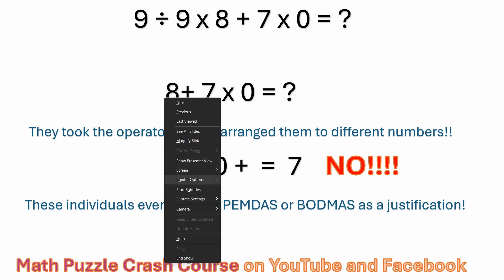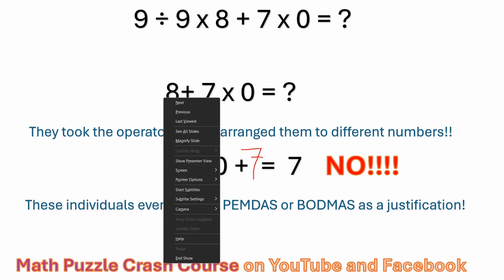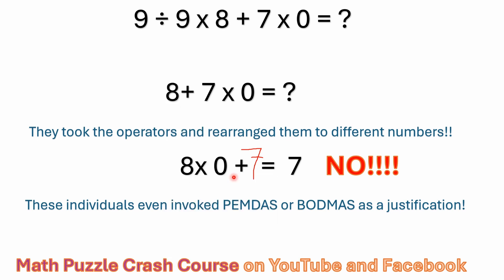What they're doing is they're taking eight plus seven times zero, which is what it is. But then they're rearranging it to say eight times zero plus seven equals seven. You can't do that. And these individuals even invoke PEMDAS and BODMAS as a justification.